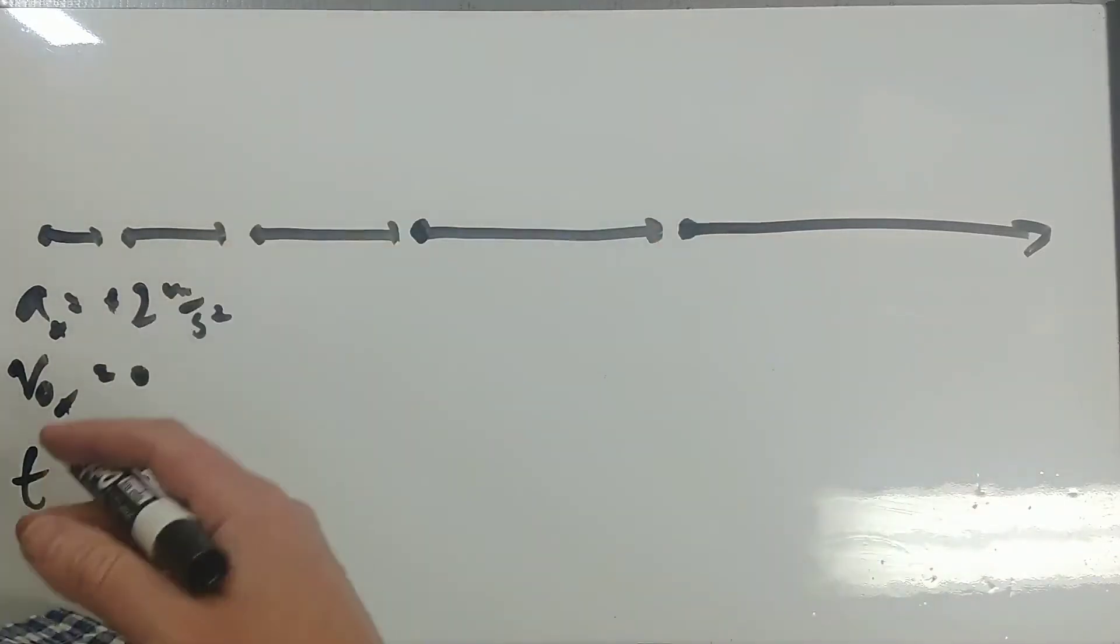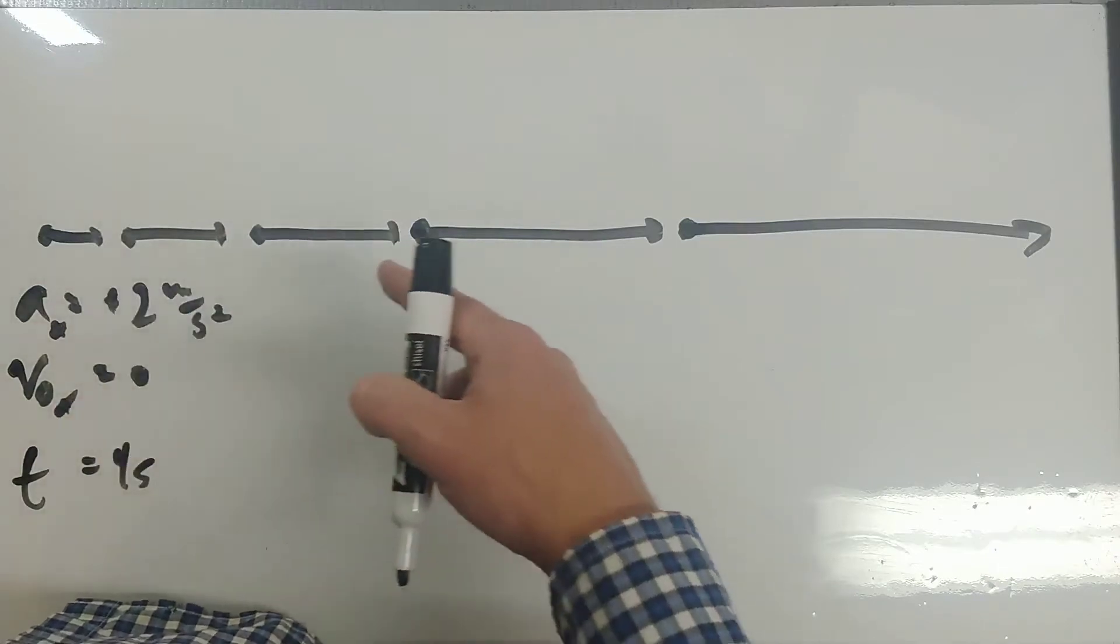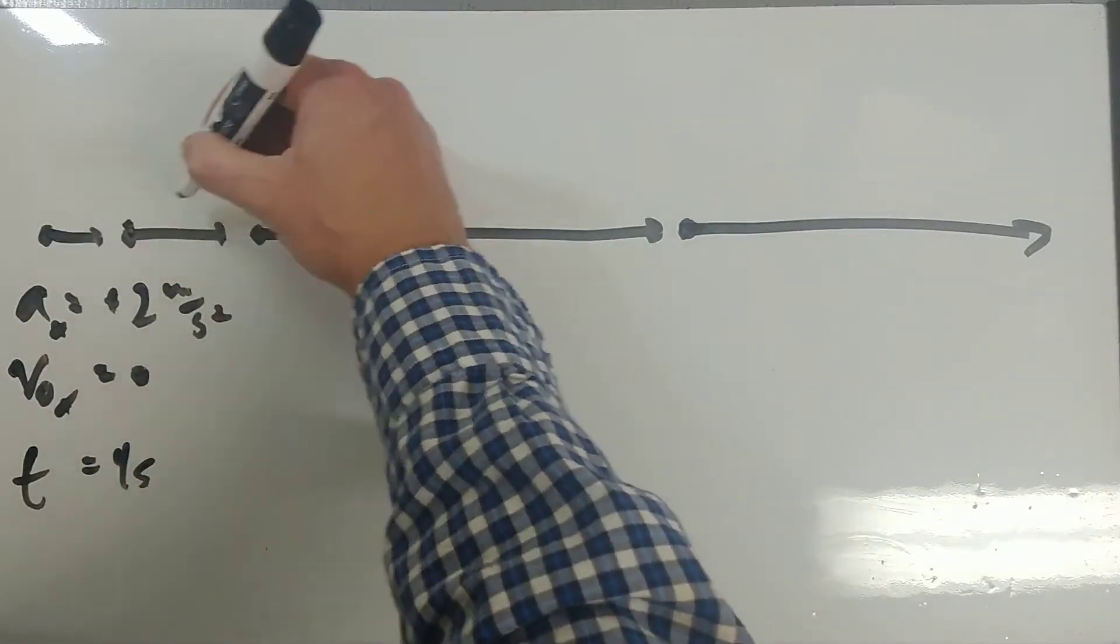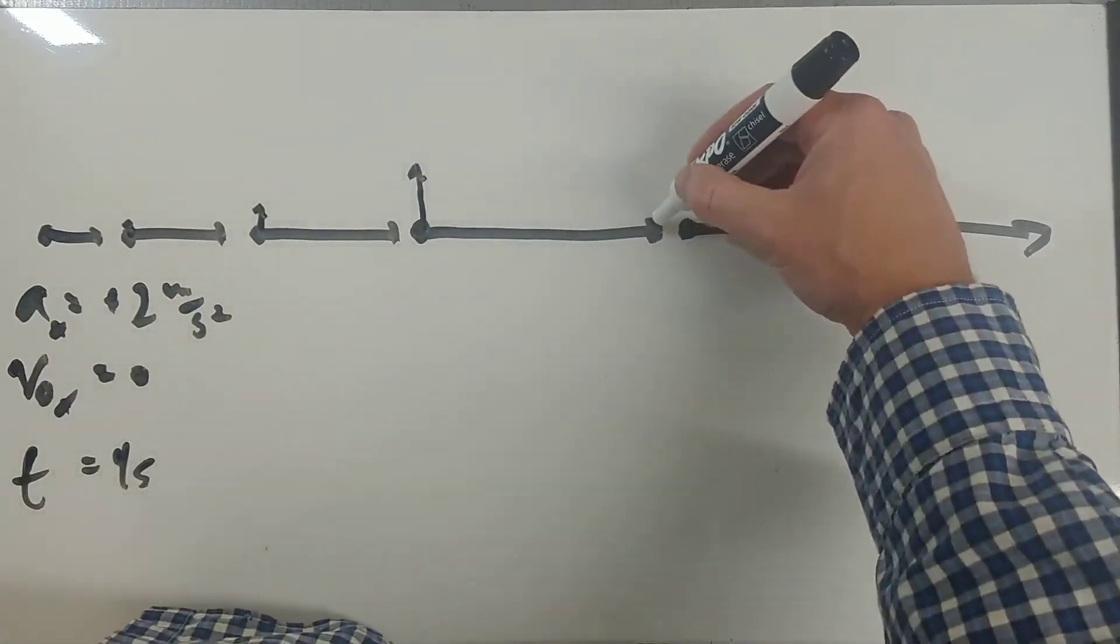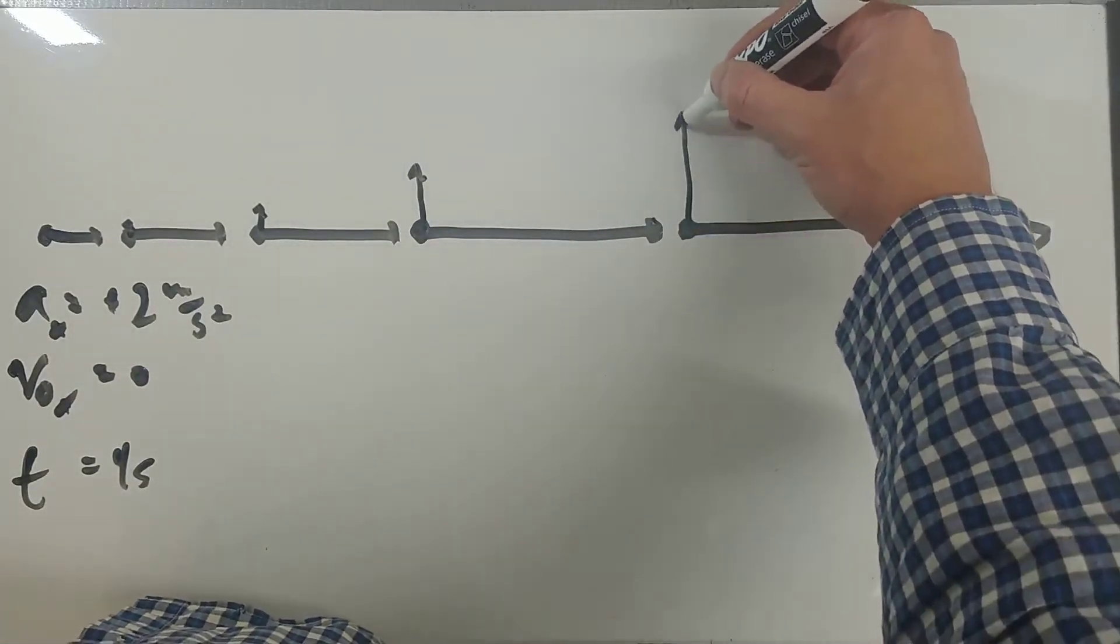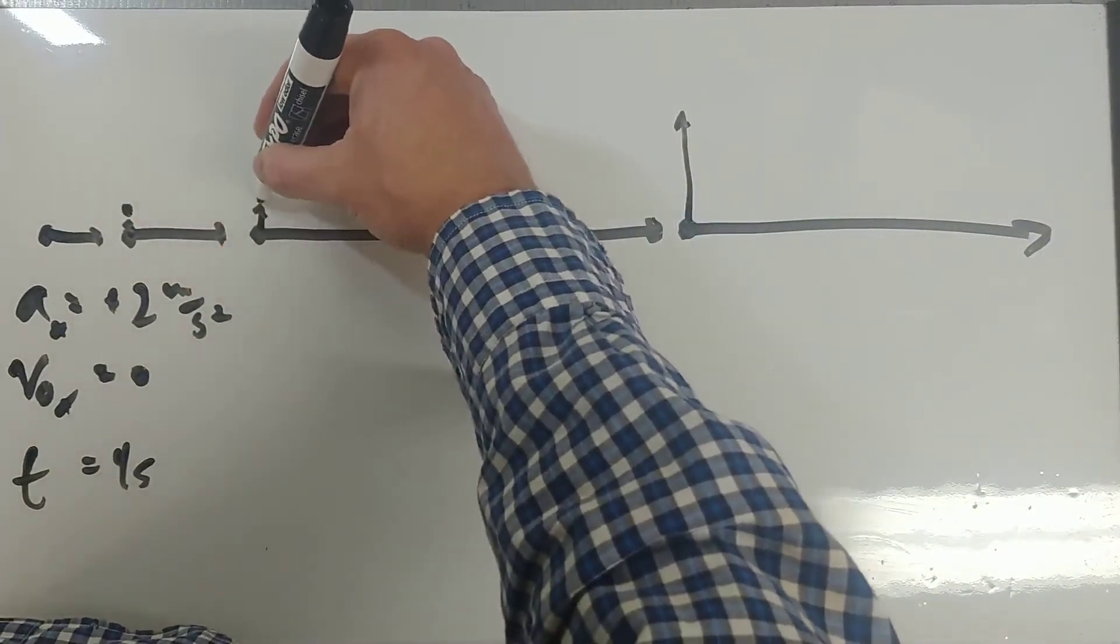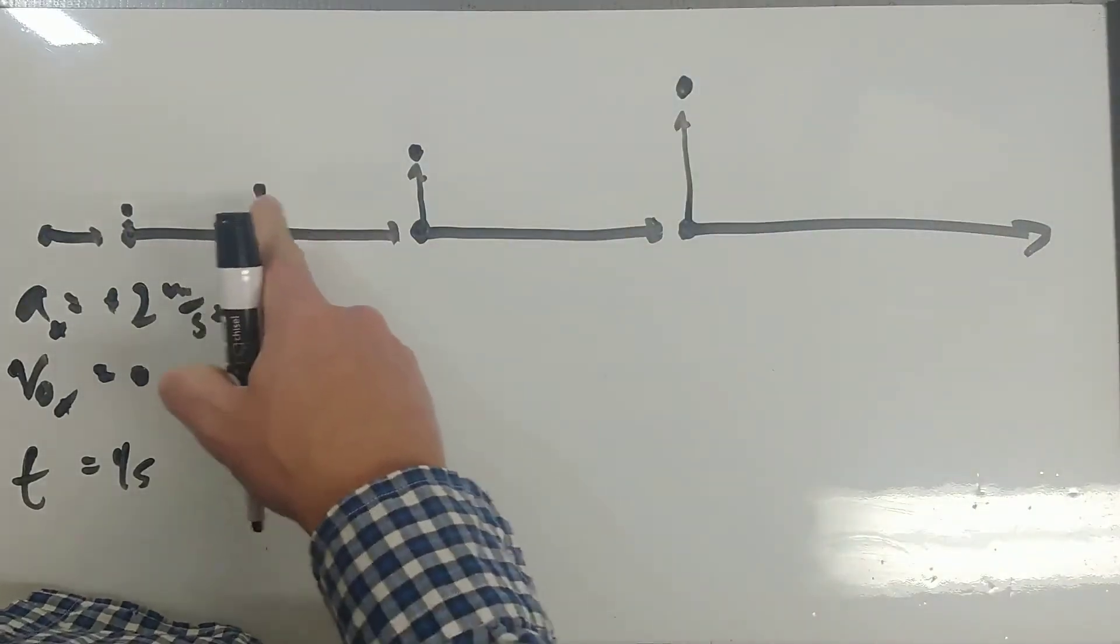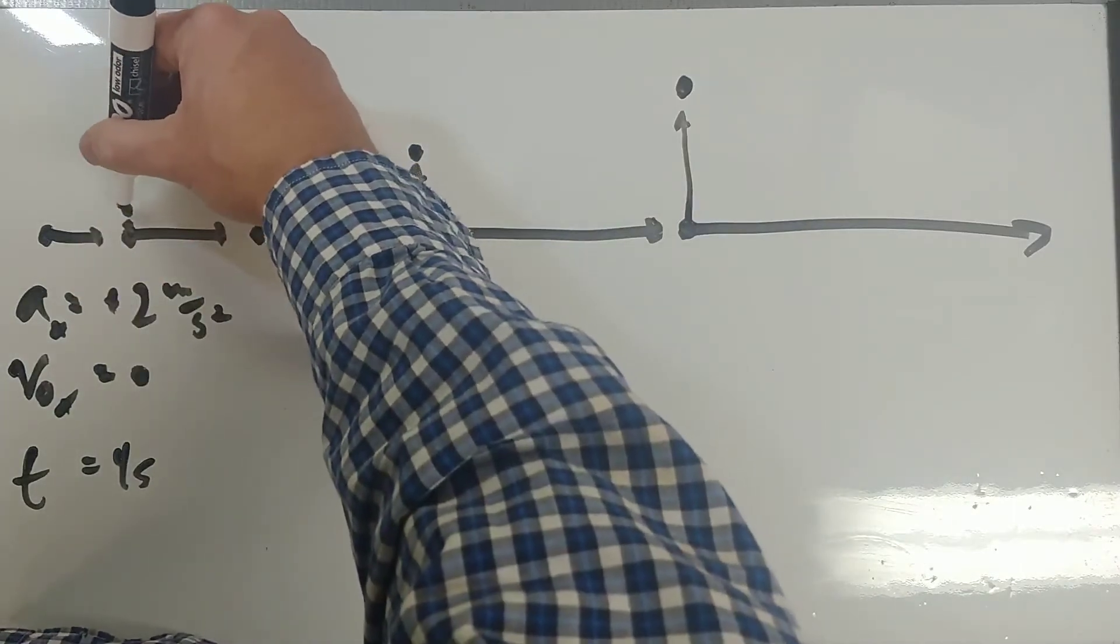But now let's say a gust of wind comes along and it starts accelerating that vertically as it moves. So I think about the component of the velocity increasing this way as well, but maybe at a lower rate. So now the actual motion of this object would actually look like this. This is what it looks like in the x-direction, in the y-direction.